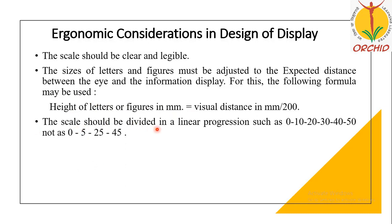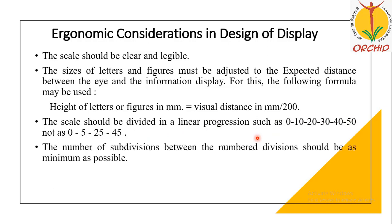The scale should be divided into linear progression, for example 0, 10, 20, 30, 40, 50 — it should not jump unevenly. The number of subdivisions between the main divisions should be as minimum as possible.